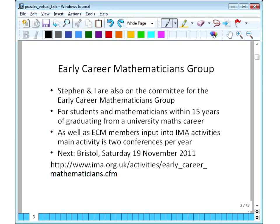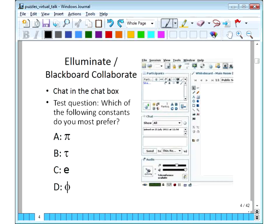The other thing that Stephen and I are involved with is the Early Career Mathematicians group. We're also on the committee for that. We seem to be a bit of a sucker for committees, Stephen and I. Possibly we just don't know how to say no to people. But anyway, so for students and mathematicians within 15 years of graduating from a university maths degree, that's the point of the Early Career group. As well as Early Career Mathematicians input into general IMA activities, we have ECM members on various other IMA committees. The main activity of the group is two conferences a year. The previous conference was last Saturday in Loughborough. The next one's in Bristol on Saturday the 19th of November 2011. It's good once you've got the hang of what something is called for it to change its name, isn't it?